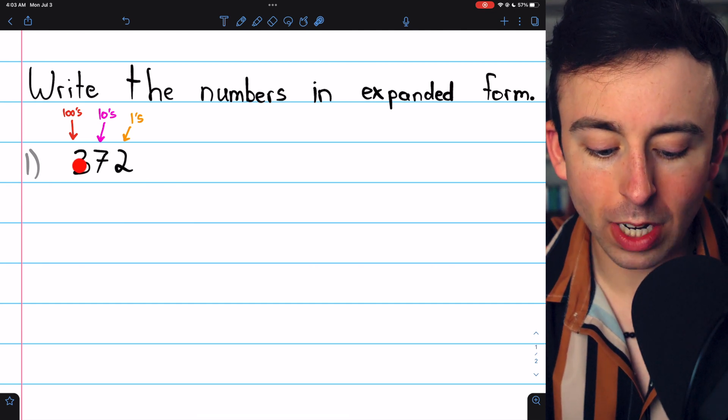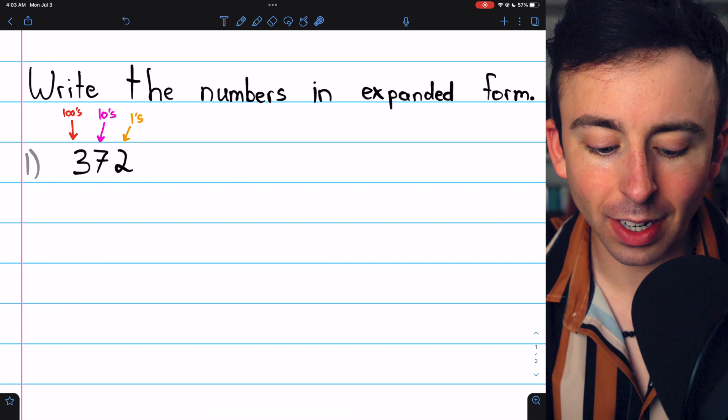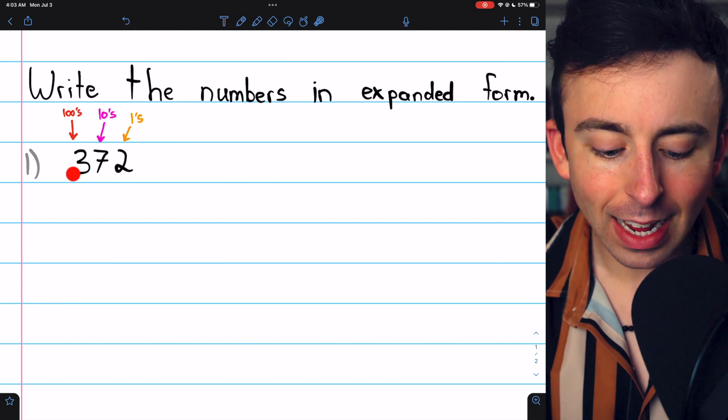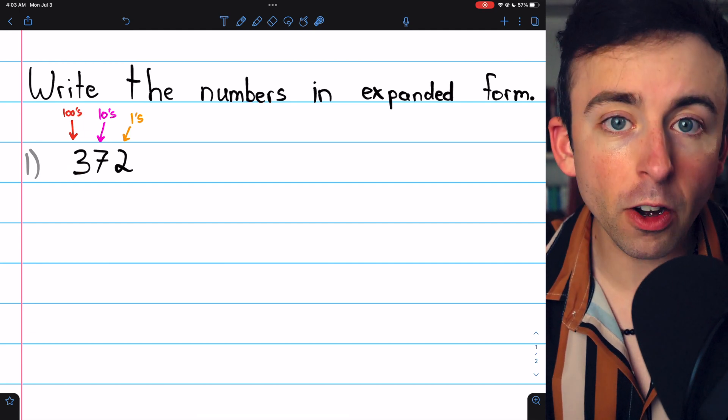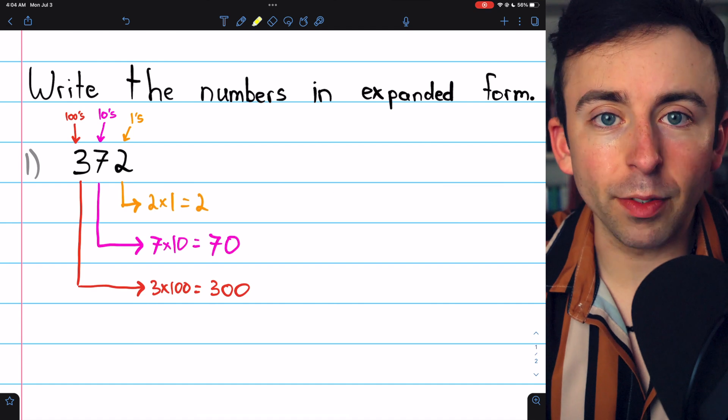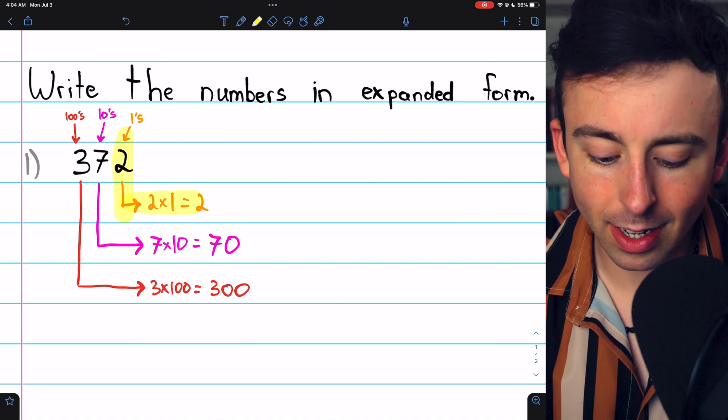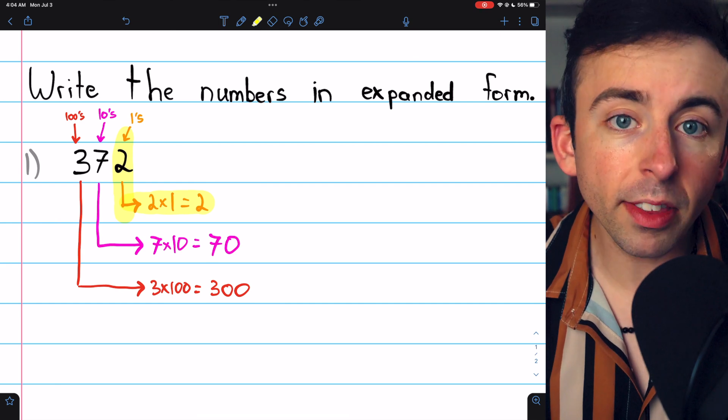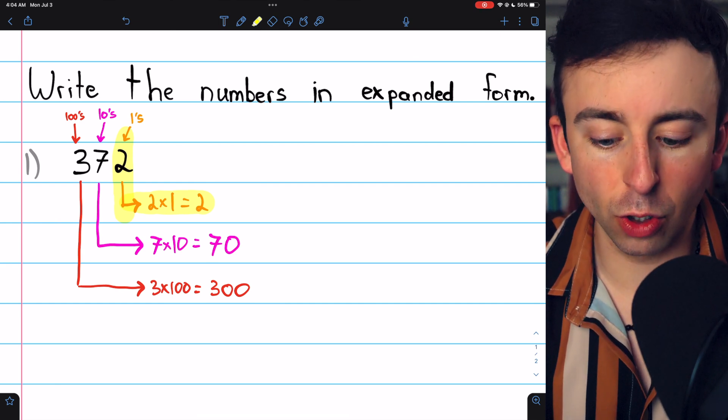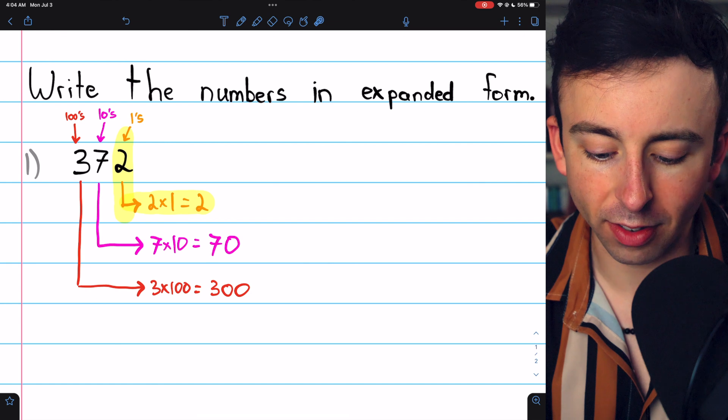Similarly, this 3 one place value to the left is in the 100's place. It's representing 300. This is how our place value system works. The first digit, the one furthest to the right, is representing how many 1's we have. In this case, it's 2 copies of 1, which is just 2.